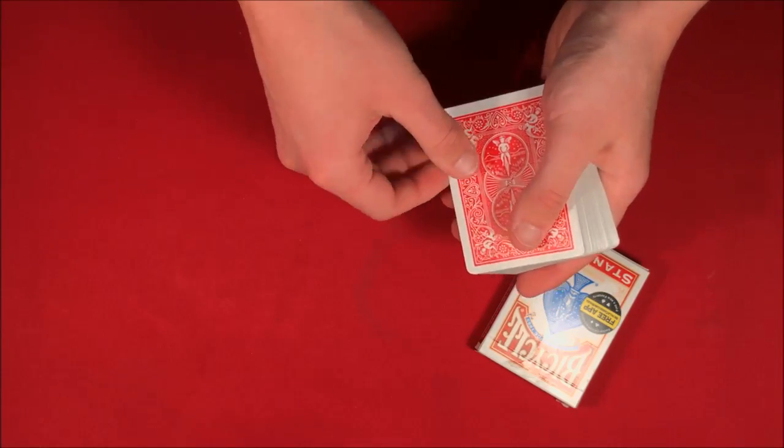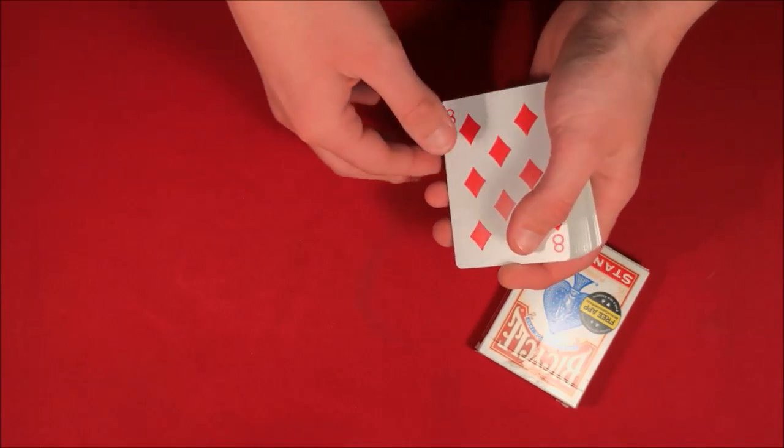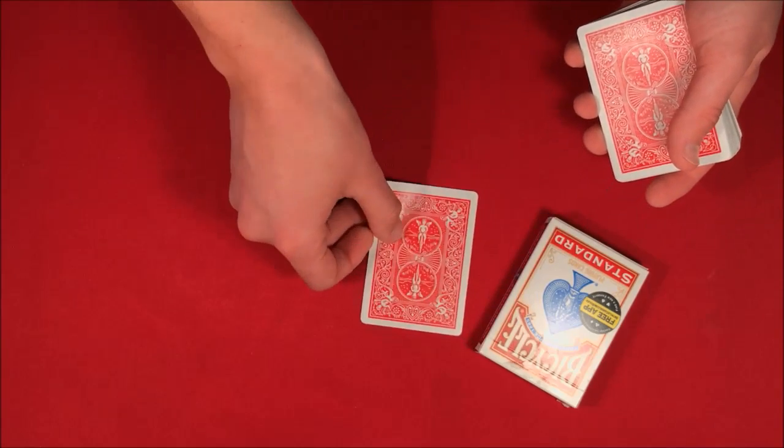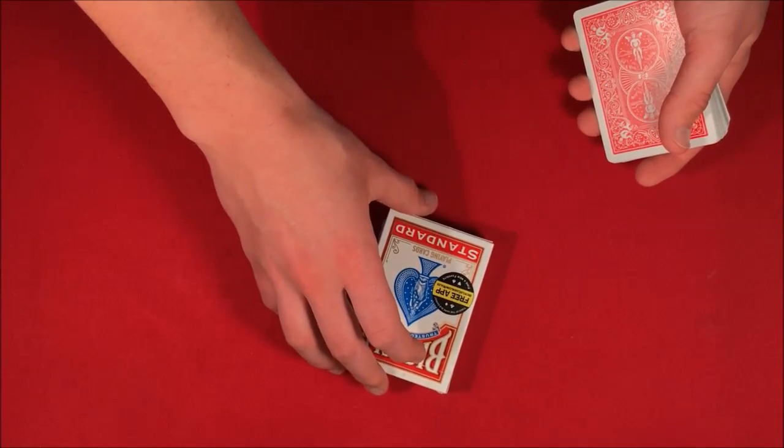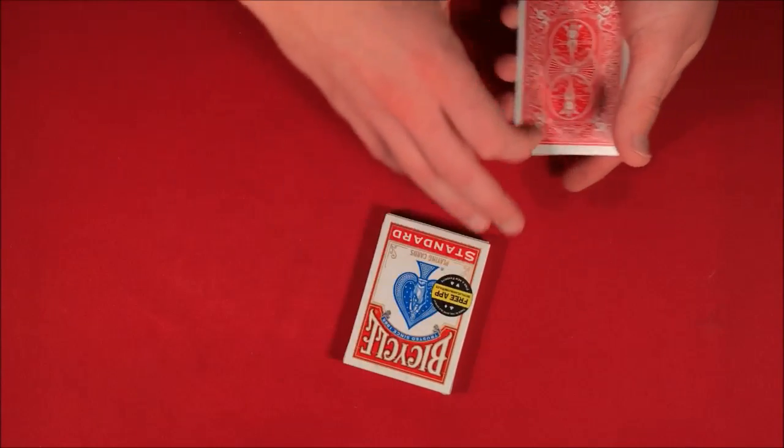I'll go ahead and take the card where you stop me at. In this case, we have the eight of diamonds. So what I want to do is I want to take the eight and I want to put it right underneath the box just like this.